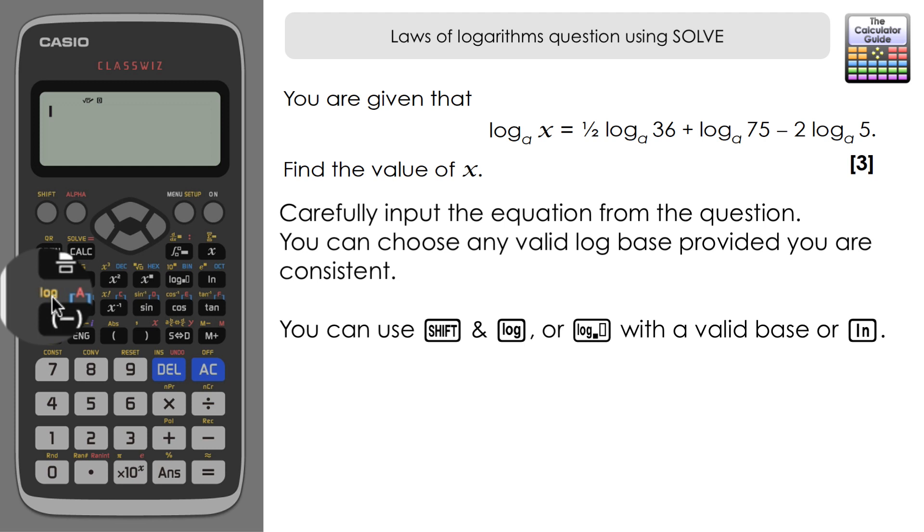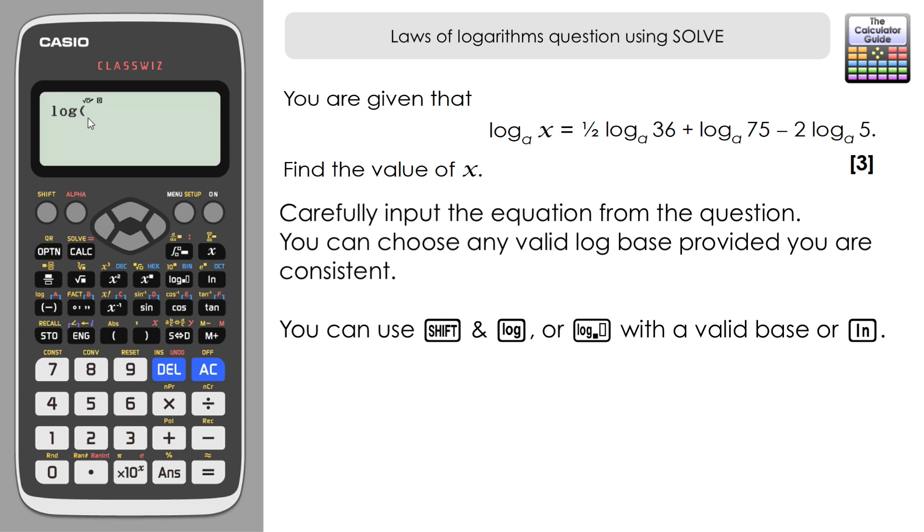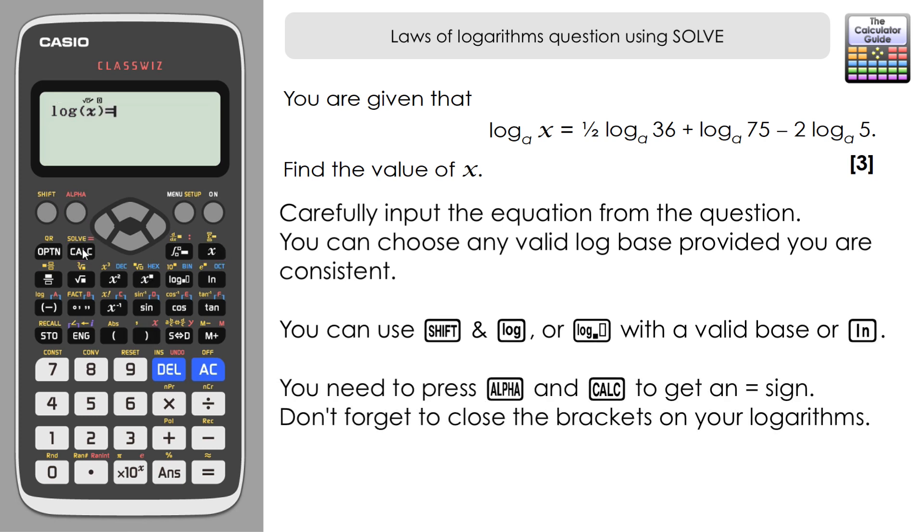You can use any base - log with any base feature, base 10, base 2, etc., or you can use the natural logarithm as well, just as long as you're consistent throughout. I'm going to use the standard log, so shift and log. That's x, and then we need to input an equals, so it's alpha and equals. Then we just need to accurately copy out the remainder of the question: 1/2 log 36 plus log 75 minus 2 log 5.